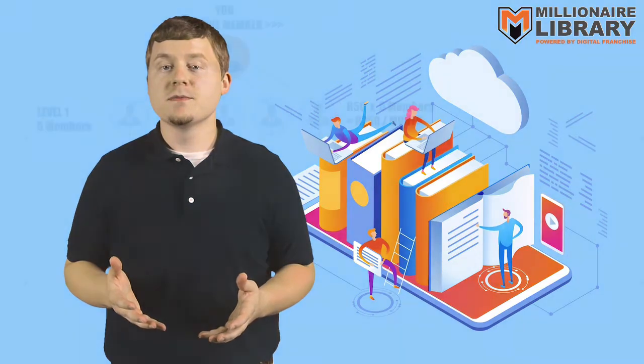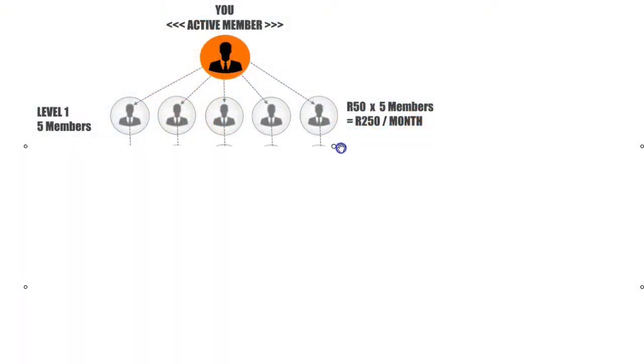When you activate your membership, you will instantly get access to your own 5-level affiliate network compensation plan with 5 earning levels. You will start at Level 1 and finish at Level 5.